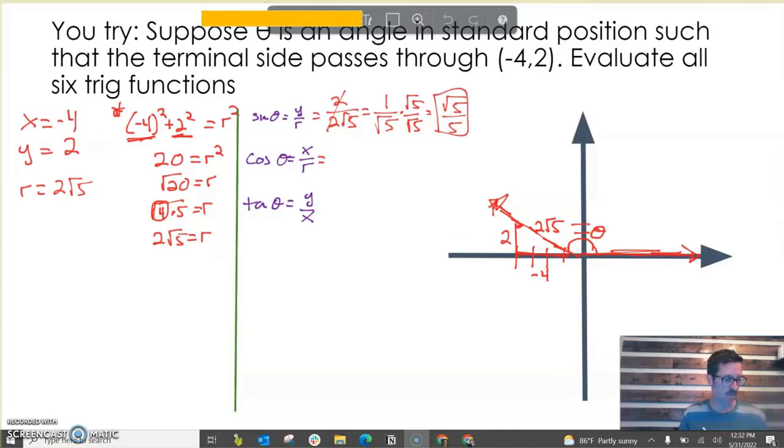Now let's do cosine theta. Cosine of theta is x over r, which simplifies to -2 over √5. But then once again, I'm multiplying by √5 over √5, and this is going to be -2√5 over 5.